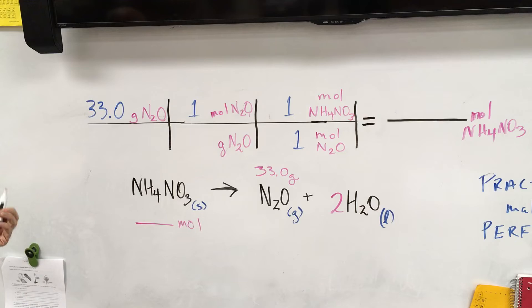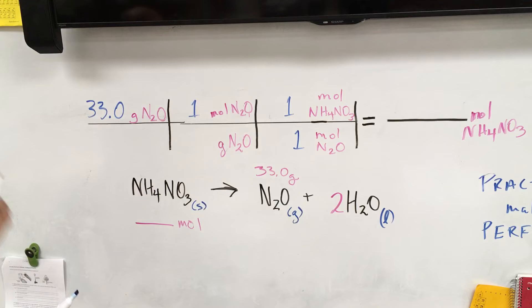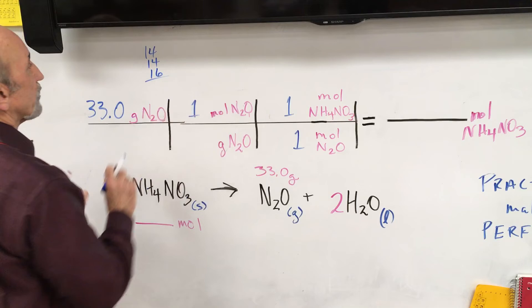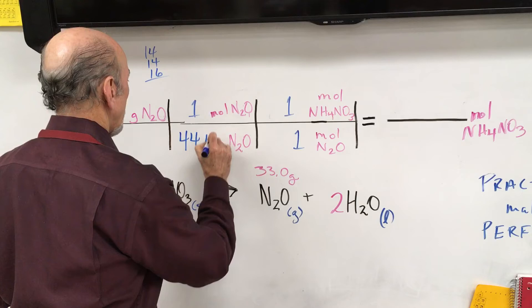So two nitrogens—that's 14 plus 14. We'll go up here and do that. 14 plus 14, one oxygen is 16, so you're looking at 28 plus 16, which would be 44. So 44.0. Now I did round off, but it would actually be 44.02 grams.